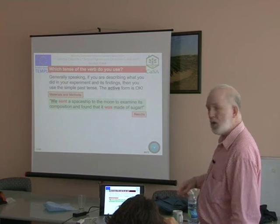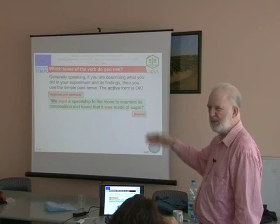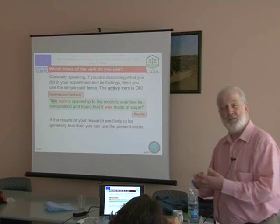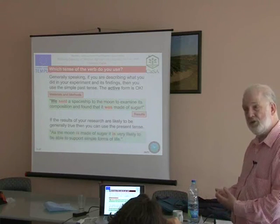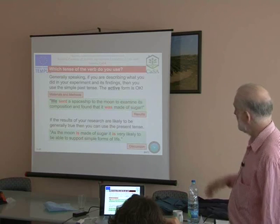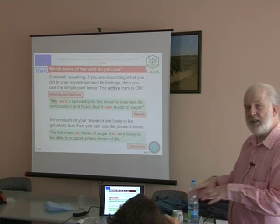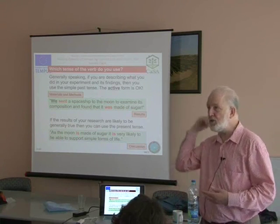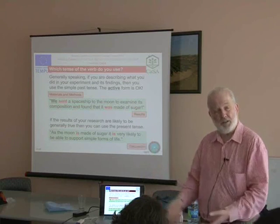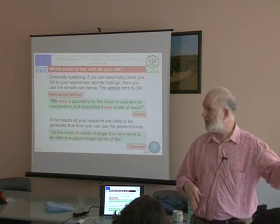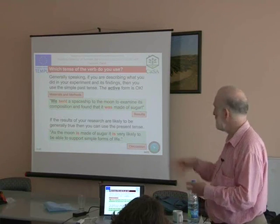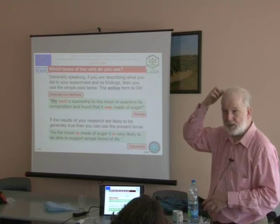Here's an example: 'We sent a spaceship to the moon to examine its composition and we found that it was made of sugar' — that's materials and methods and results in the past tense. However, if the results of your research are likely to be generally true, then you can use the present tense: 'The moon is made of sugar — it is very likely to support simple forms of life.' So in the interpretation of your results, if they represent a situation that will be true today and in the future, then you can refer to them in the present tense.